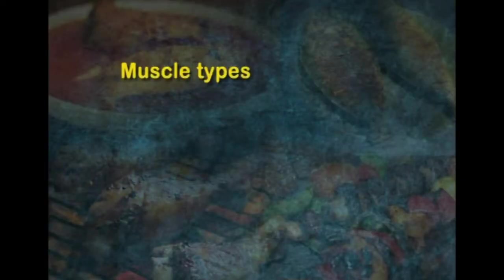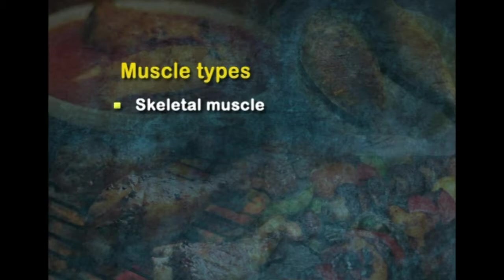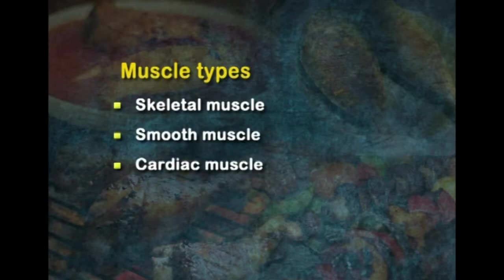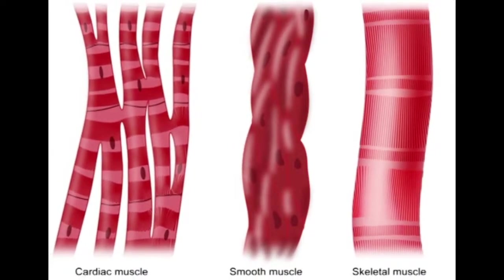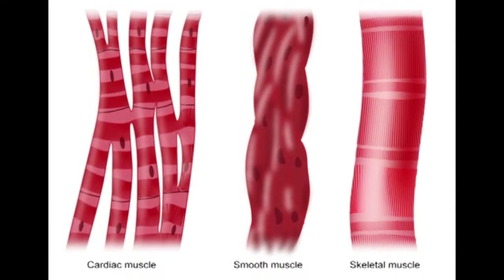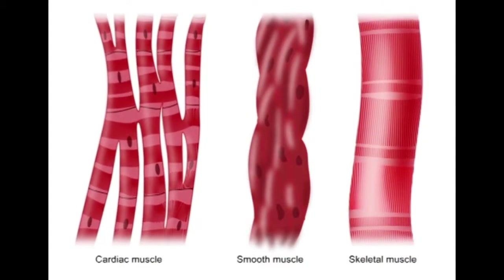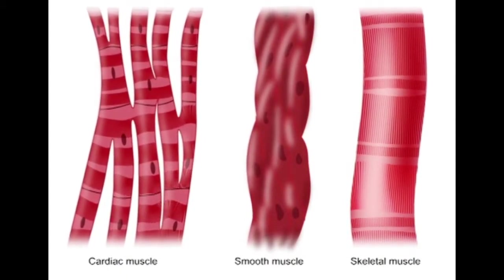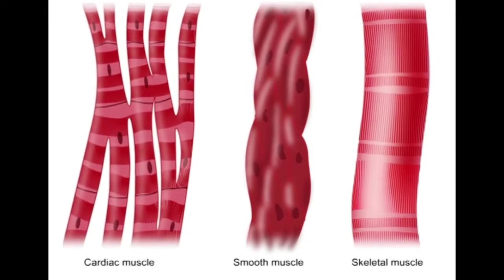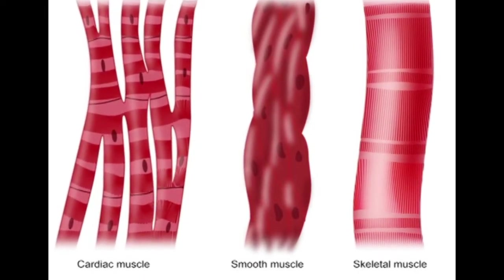Now we shall look at the structure of meat. Meat can be divided into three distinct muscle types: skeletal muscle, smooth muscle and cardiac muscle. Skeletal muscle constitutes the bulk — about 35 to 65 percent of the carcass weight — and consists of organs of the muscular system attached directly or indirectly to the bones. Smooth muscle makes up the digestive tract, and the heart is composed of cardiac muscle.